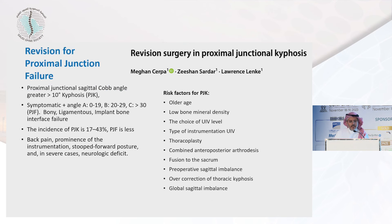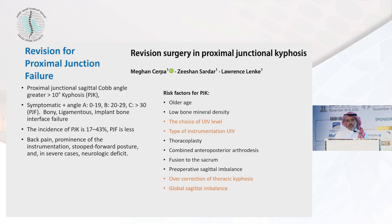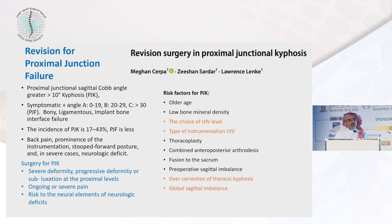Let's start with revision for proximal junctional failure. Looking at the risk factors, some are not changeable — we can't change patient age or bone quality — but we can always pay attention to the upper instrumented vertebra, the type of instrumentation there, not to overcorrect the kyphosis, and global sagittal alignment. We operate for junctional kyphosis when it is very symptomatic.